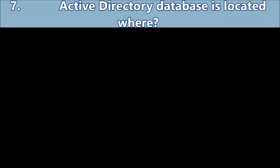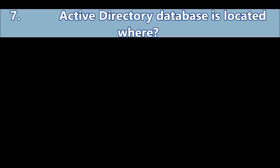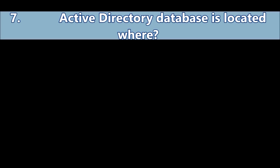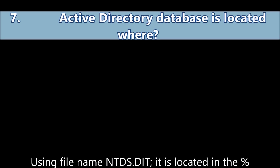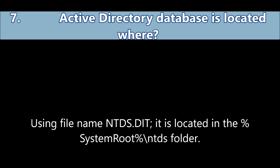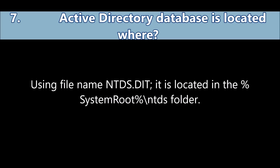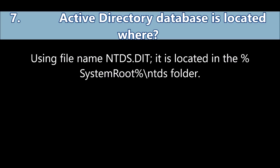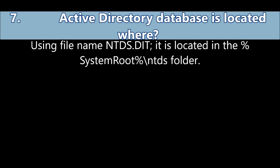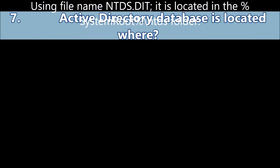Question number seven: Where is the Active Directory database located? Using the file name ntds.dit, it is located in the system root folder ntds.